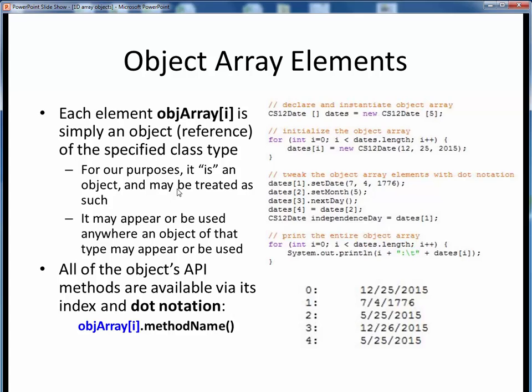We can use an array element anywhere an object of that class type may appear or be used. Furthermore, all of the methods of that particular class API are available to us by using that indexed element together with dot notation, such as we see down here.